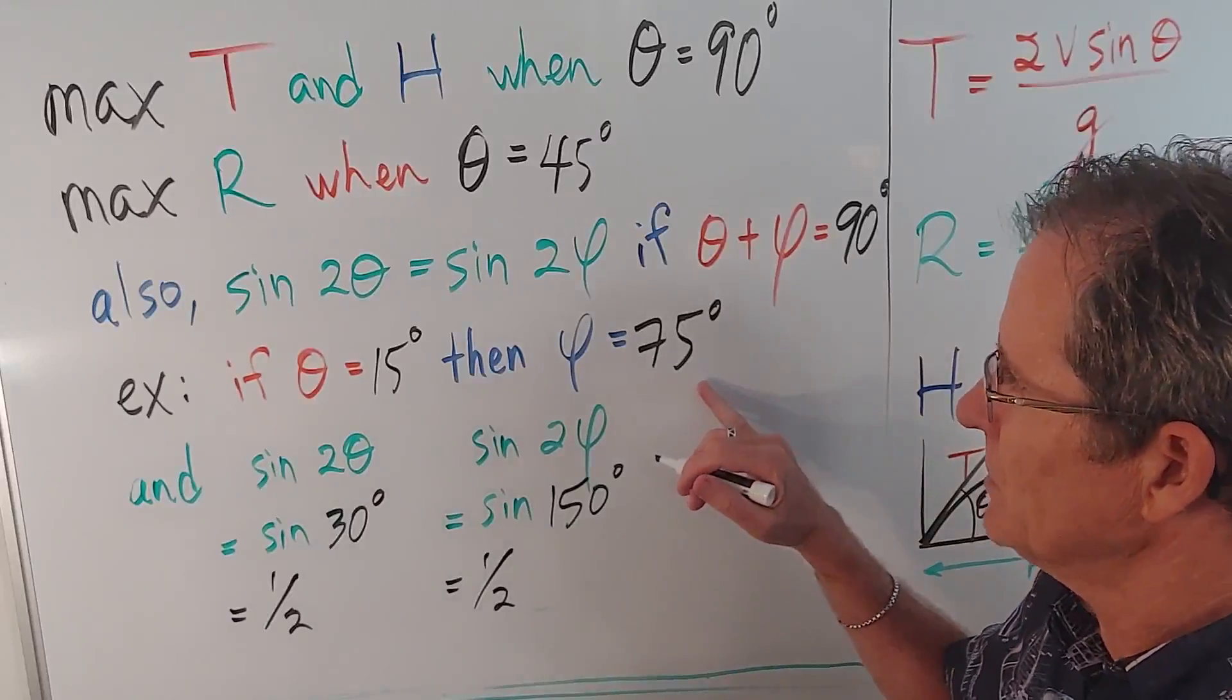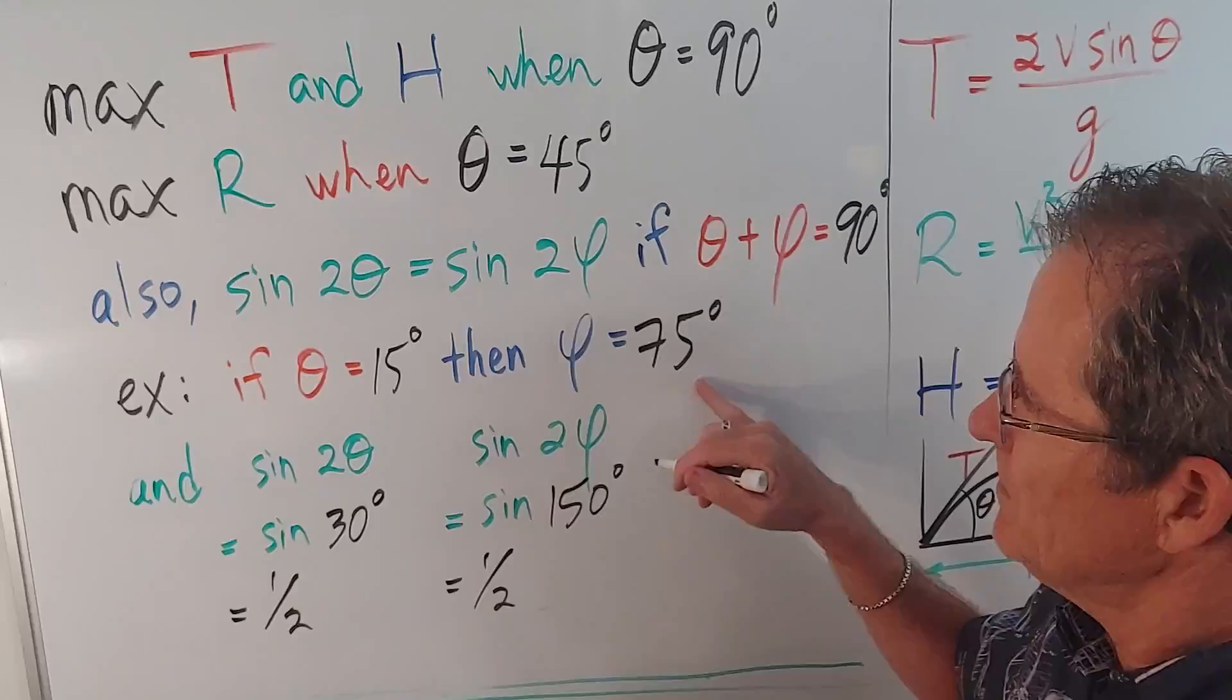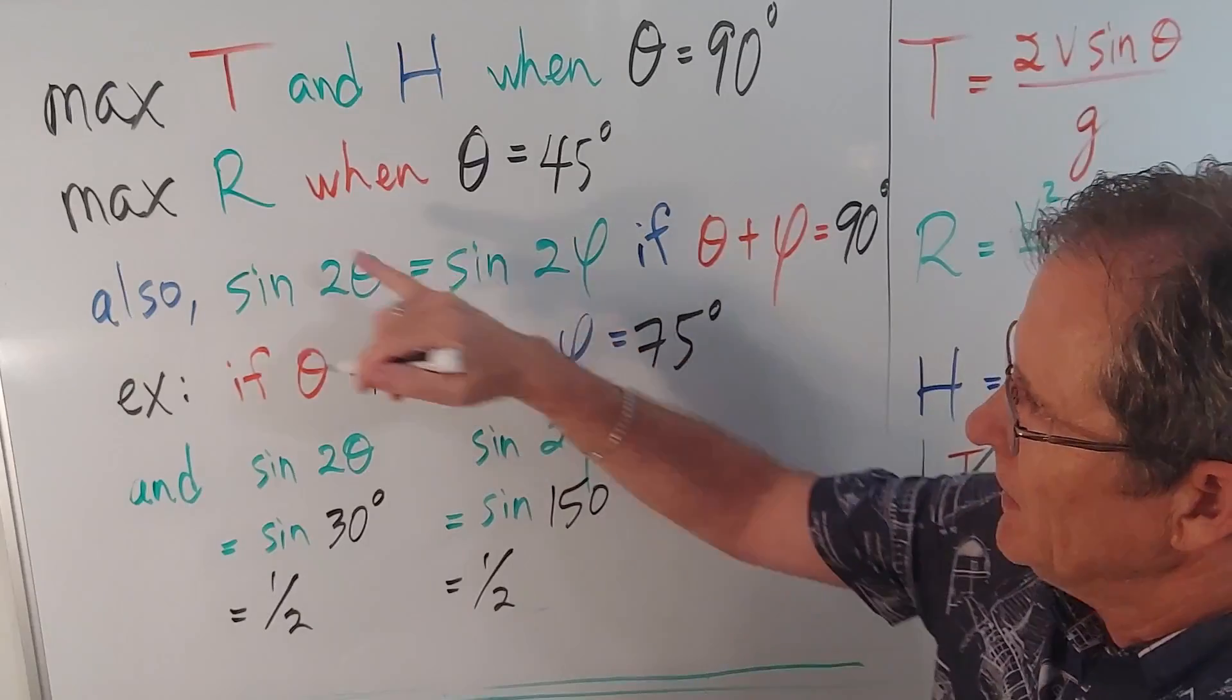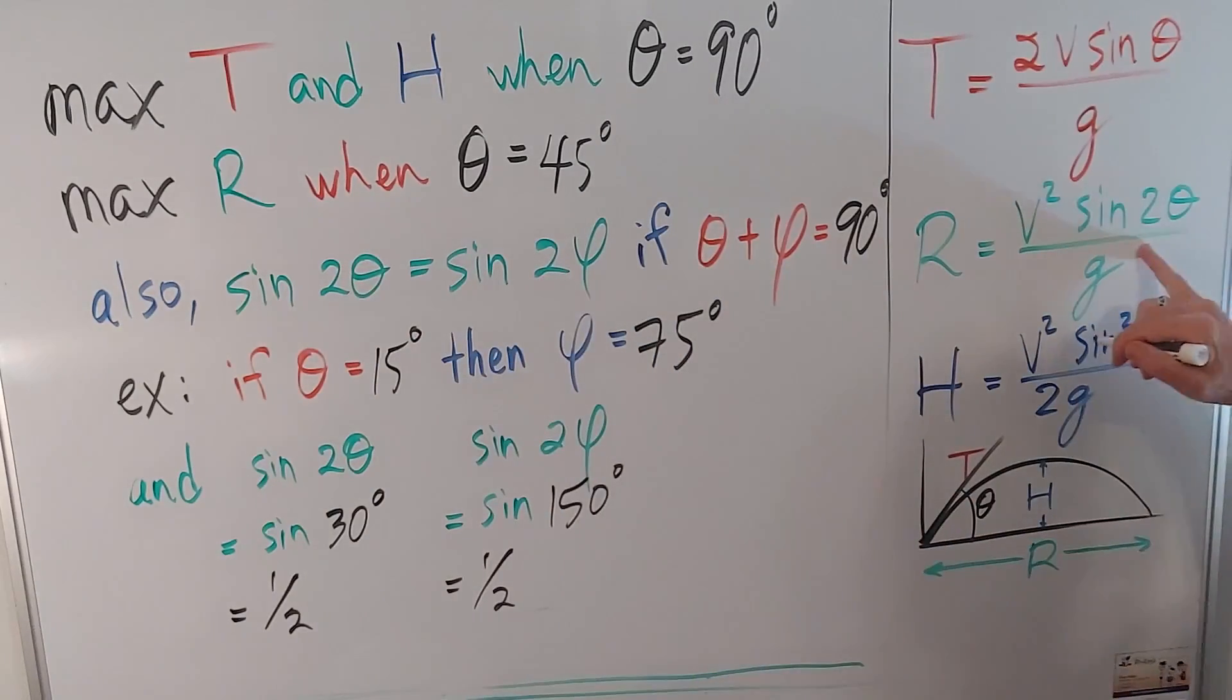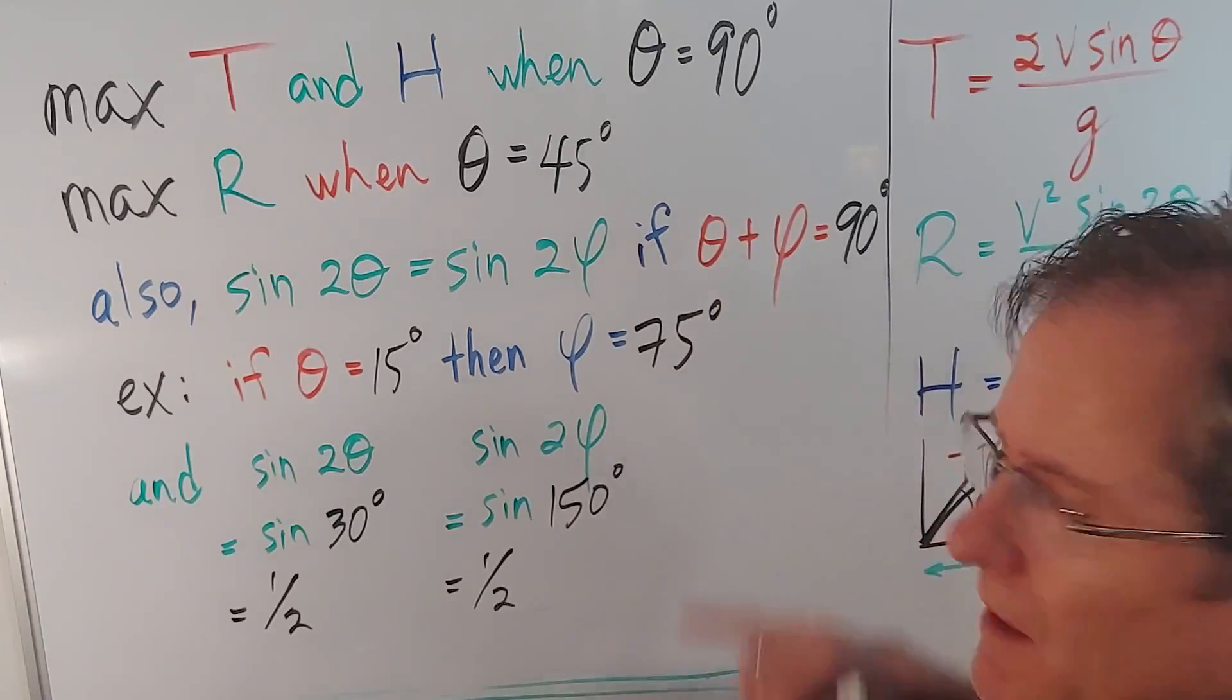So, sure enough, here's an example that shows that the projectile will travel the same range because of the 2 theta being in the formula if the two angles both add up to 90 degrees.